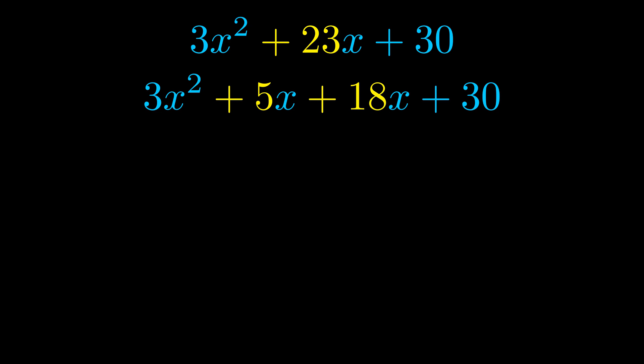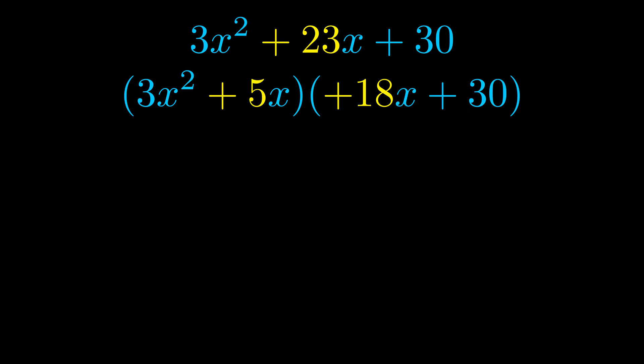Once we've done this, we put parentheses around the first term and the last term. We do that so that we can take the greatest common factor out of both terms. We can see the greatest common factor is now outside in green.